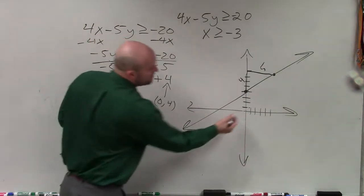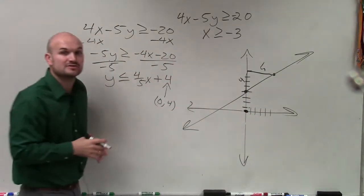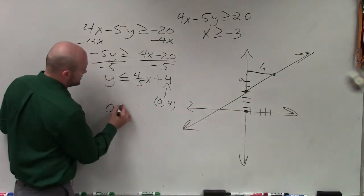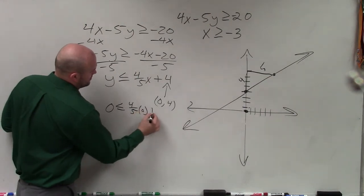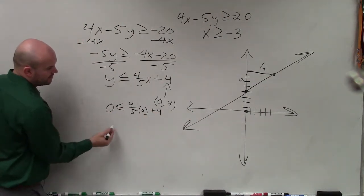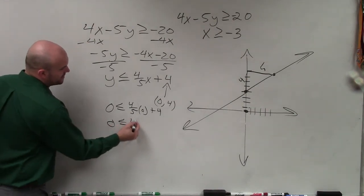Alright, and now we just need to use our test points. And again, based on Jordan, I will use 0, 0, because my line does not go through 0, 0. So therefore, I plug in 0 in for y, plug 0 in for y, and 0 in for x. When doing that, I have 0 is less than or equal to 4.